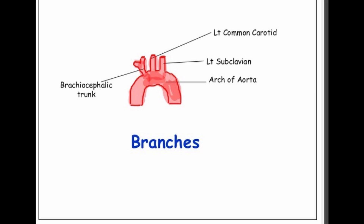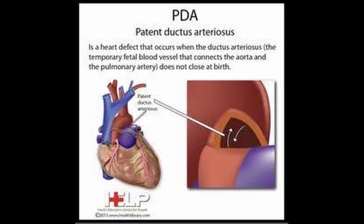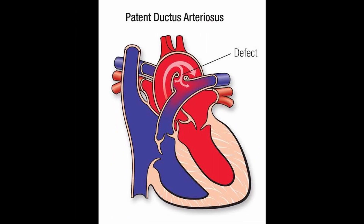Now we discuss the applied anatomy or clinical anatomy of the arch of aorta. The first condition is patent ductus arteriosus, a heart defect that occurs when the ductus arteriosus does not close at birth. The ductus arteriosus is a temporary fetal blood vessel that connects the aorta and the pulmonary artery. When it does not close at birth, it leads to patent ductus arteriosus.